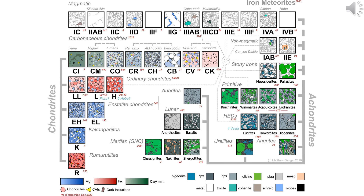Observe the surface and shape. Examine the exterior of the meteorite. Most meteorites have a fusion crust formed as they enter Earth's atmosphere. They often have a dark color and a glossy surface. Magnetic test: many meteorites contain iron and are therefore magnetic, attracting a magnet slightly. However, some types such as carbonaceous chondrites are non-magnetic.